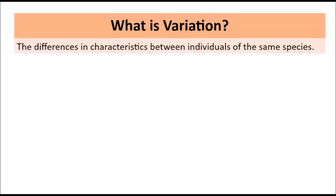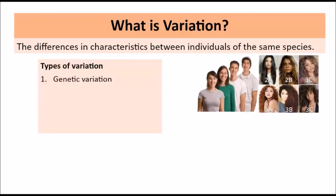So what exactly is variation? Variation is the differences in characteristics between individuals of the same species. When we talk about variation we're looking at the same species more so than different species, because you expect that with different species you're going to have diversity because of the differences in genes. So with variation we're focusing on the differences between the same species.